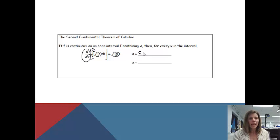A couple of rules. A is always going to be a constant. It doesn't matter if it's 0, 1, negative 1,000. As long as it's a constant, this theorem will hold. And then the x will always be a variable.